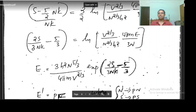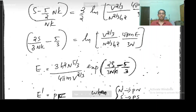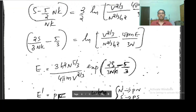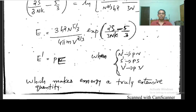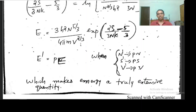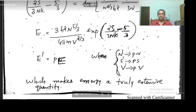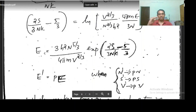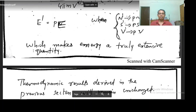Energy is: E = (3h²/4πm) · n^(5/3) · exp(2S/3nk − 5/3). This is the true expression for energy, because it is derived from the correct expression for entropy.